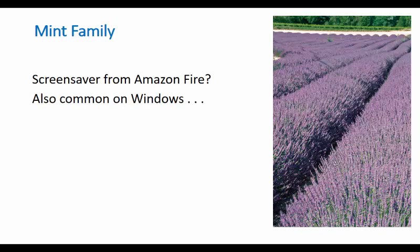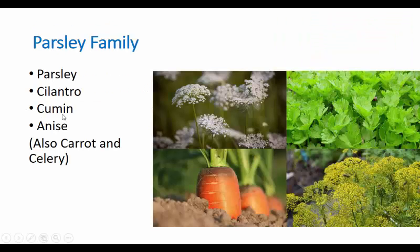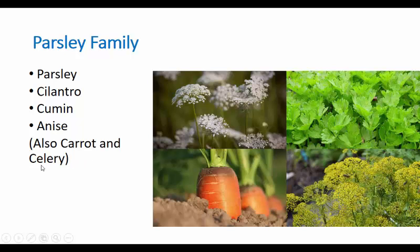Cumin is one of your primary spices when making chili — what you think of as chili flavor is mostly cumin, not chili pepper. Cilantro we love in Mexican food. Parsley shows up a lot; I'm not even sure what the flavor of parsley is — it modifies other flavors, making other spices taste better for some reason. Also in the parsley family, though not herbs: carrot and celery. You'll need to know carrot and celery are closely related to everyone in the parsley family.